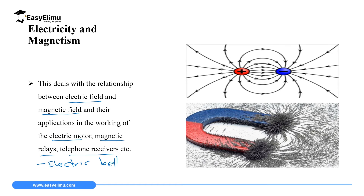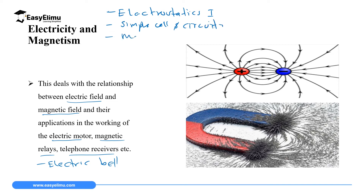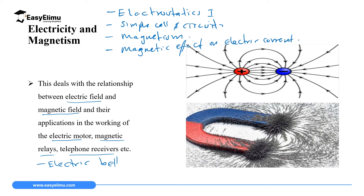Some topics under electricity and magnetism include electrostatics in form one, simple cell and circuit in form one, magnetism in form two, and magnetic effect of electric current in form two. There are other related topics in forms three and four as well.